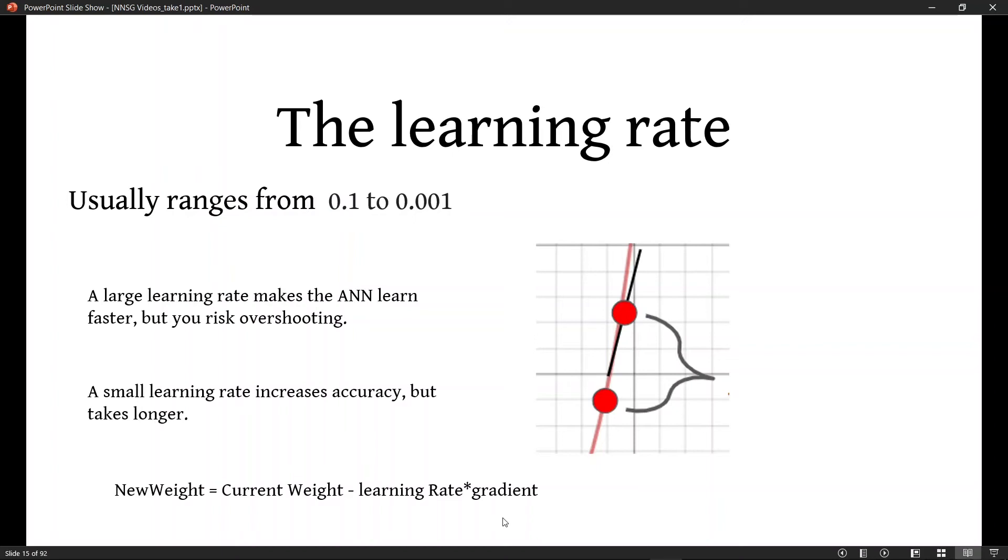Down here, I put the equation to generate the new weight or the adjustment. You take the current weight, so the weight that you already started with. You subtract that by your learning rate, which is somewhere between these numbers, and you multiply it by the gradient that you computed.